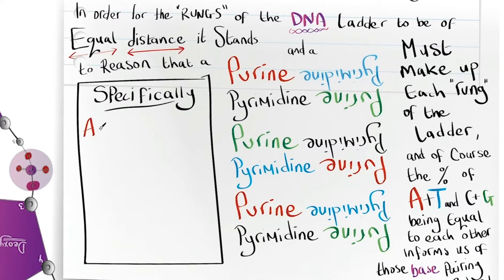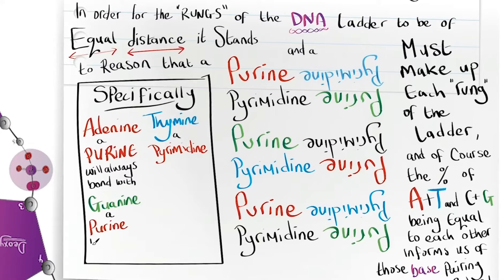Specifically, adenine, a purine, will always bond with thymine, a pyrimidine. Guanine, a purine, will always bond with cytosine, a pyrimidine.